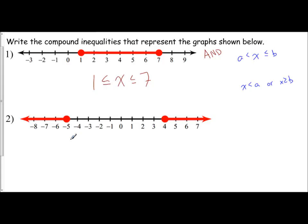Now we look at number two. Which one is number two? Is it an and or is it an or? Since we see two graphs separate from each other, this is an example of an or compound inequality.